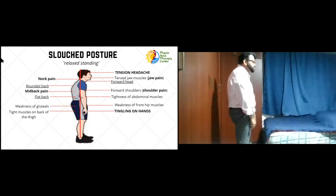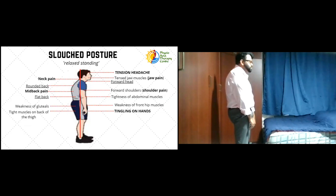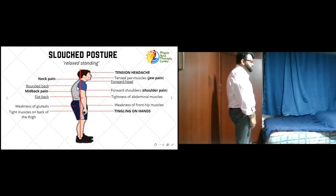Focusing on the pelvis and hips in the slouch posture: the back becomes flat, meaning the arch on the low back is decreased or absent. A flat back leads to tightness of the abdominal muscles. The gluteal muscles and the muscles in the front of the hip are stretched, developing weakness. The muscles on the back of the thigh also develop tightness. Additionally, the rounded shoulders compress the shoulder joint, which can impinge nerves and lead to tingling in the hands.